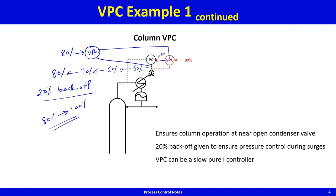Note that the valve positioning controller can be a slow controller — it could be a pure integral (I-only) controller. Because the column pressure is floating, this is also called floating pressure control.